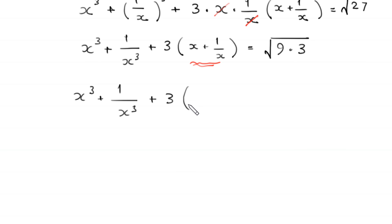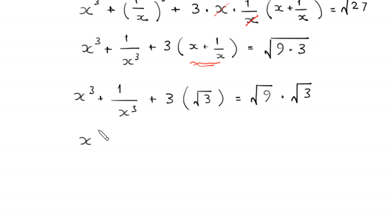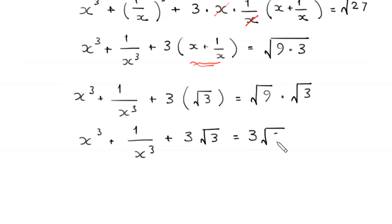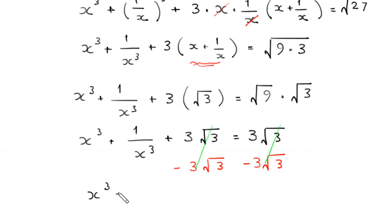We replace x plus 1 over x with its value, which is square root of 3. Square root of 9 times 3 can be written as root of 9 times root of 3. So x cubed plus 1 over x cubed plus 3 times root 3 equals 3 times root 3. Subtracting 3 root 3 from both sides, we get x cubed plus 1 over x cubed is equal to 0.